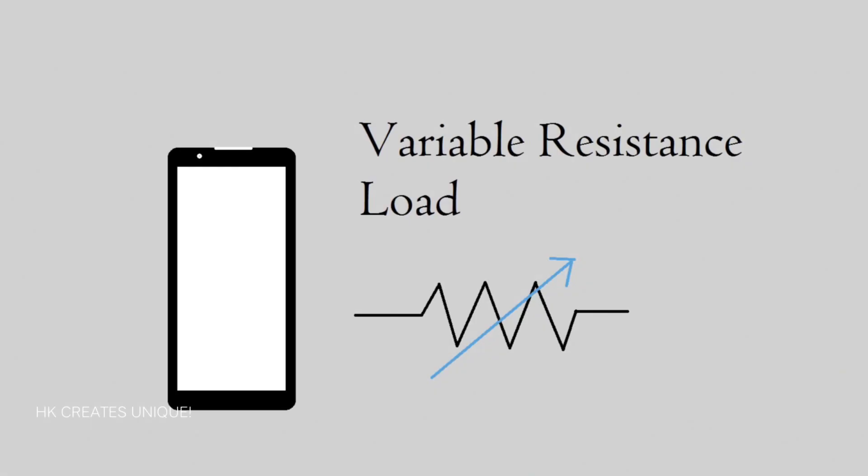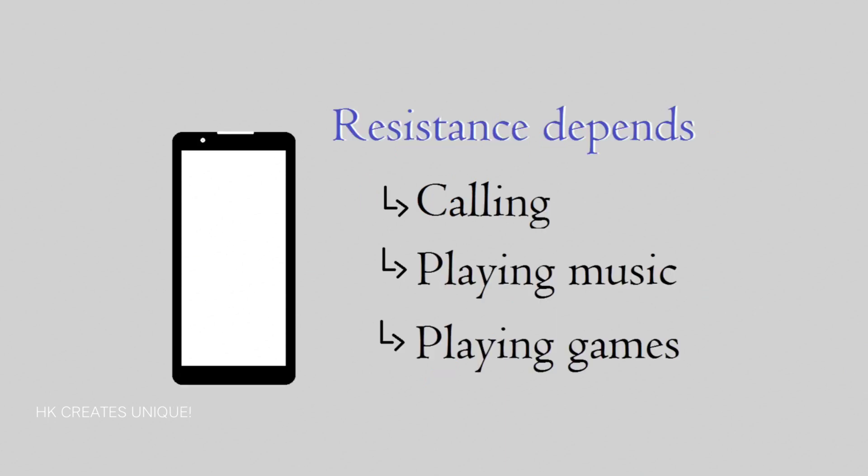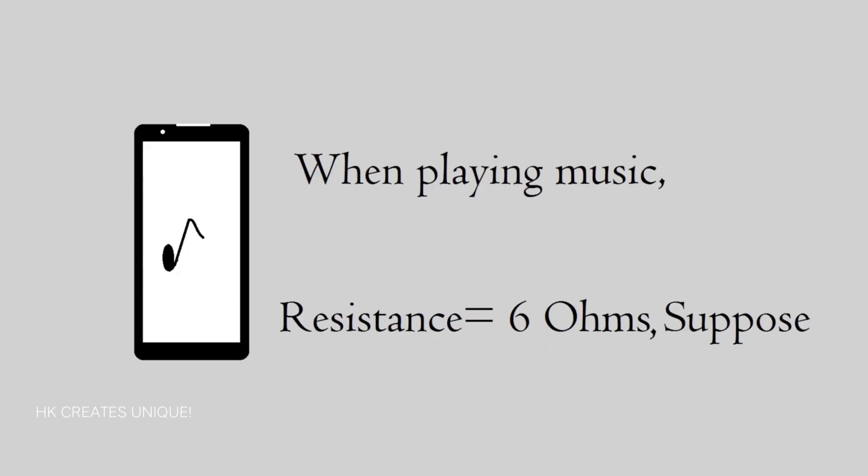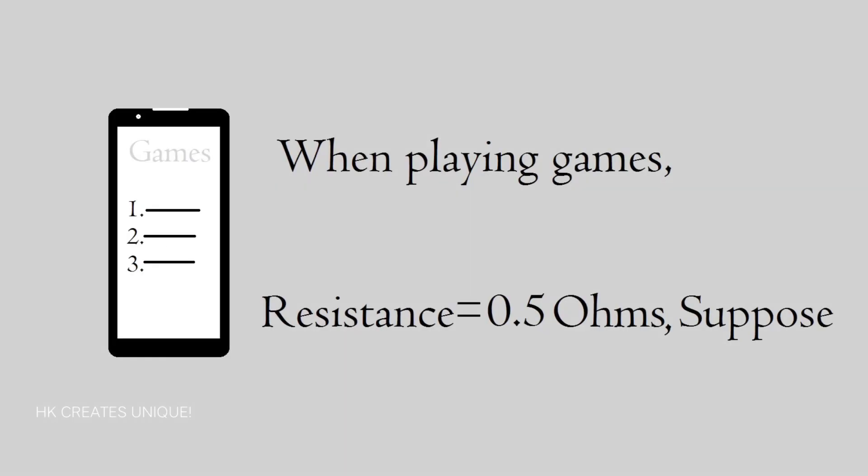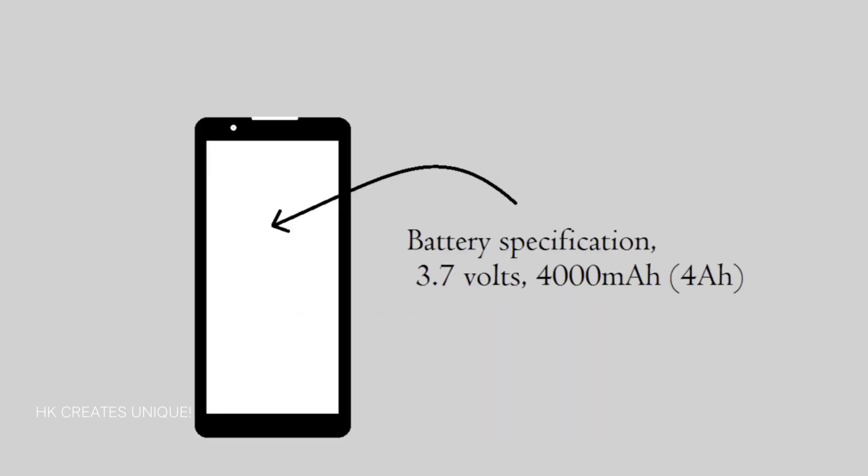Your smartphone is basically a variable resistance load. Resistance depends on what you're doing with your phone. For example, suppose when you play music, resistance becomes 6 Ohms. But when you play powerful games, resistance becomes 0.5 Ohms. The battery specification says it's 3.7V and has a capacity of 4000 mAh, or 4Ah.